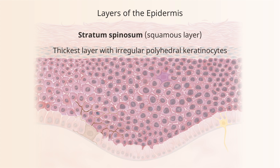The stratum spinosum is the thickest layer and sits on top of the basal layer. These are progressively maturing keratinocytes that start off cuboidal, then get bigger and flatter as they progress from bottom to top. It's called the stratum spinosum because there are little spiny processes connecting the cells. Histologically, there appears to be a small gap between cells held together by spines — those are actually desmosomes. The separation is an artifact of pathologic processing.